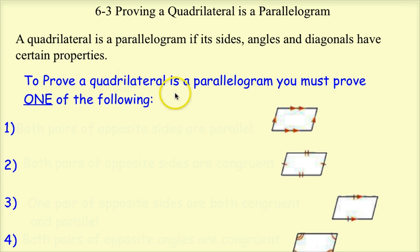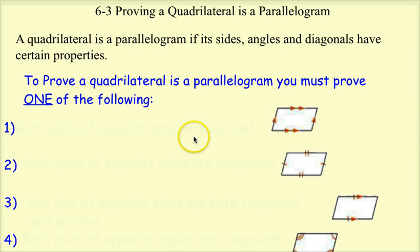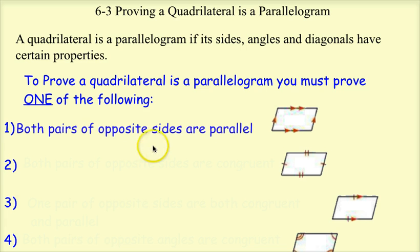To prove a quadrilateral is a parallelogram, you must prove one of the following. If we look at the picture, the top line is parallel to the bottom line, and the left line is parallel to the right line. So one way is if I can prove both pairs of opposite sides are parallel to each other, then it's a parallelogram. That's the definition of a parallelogram, so that one makes sense.